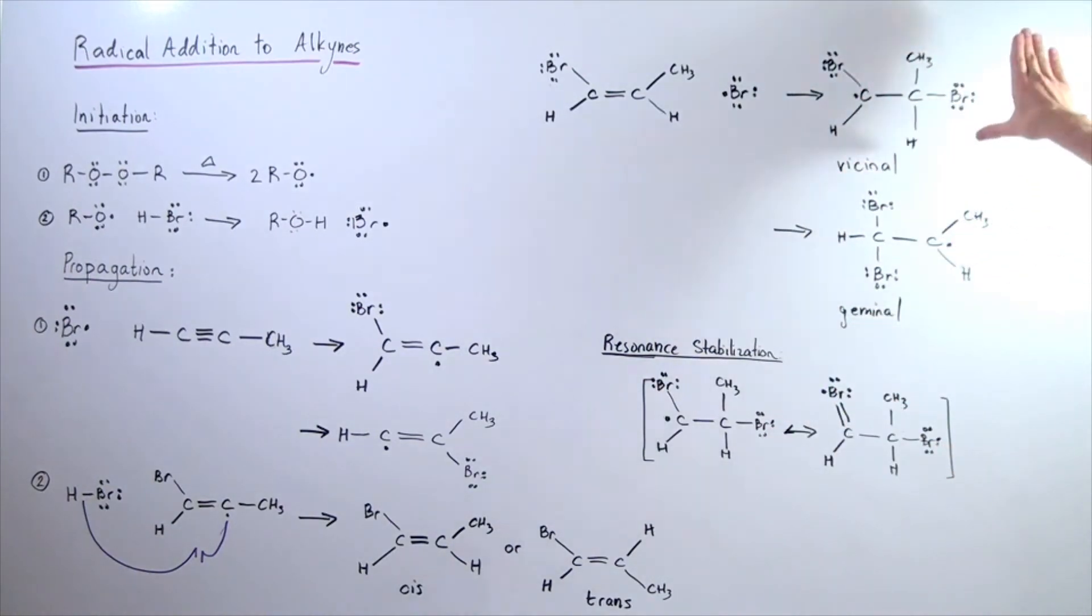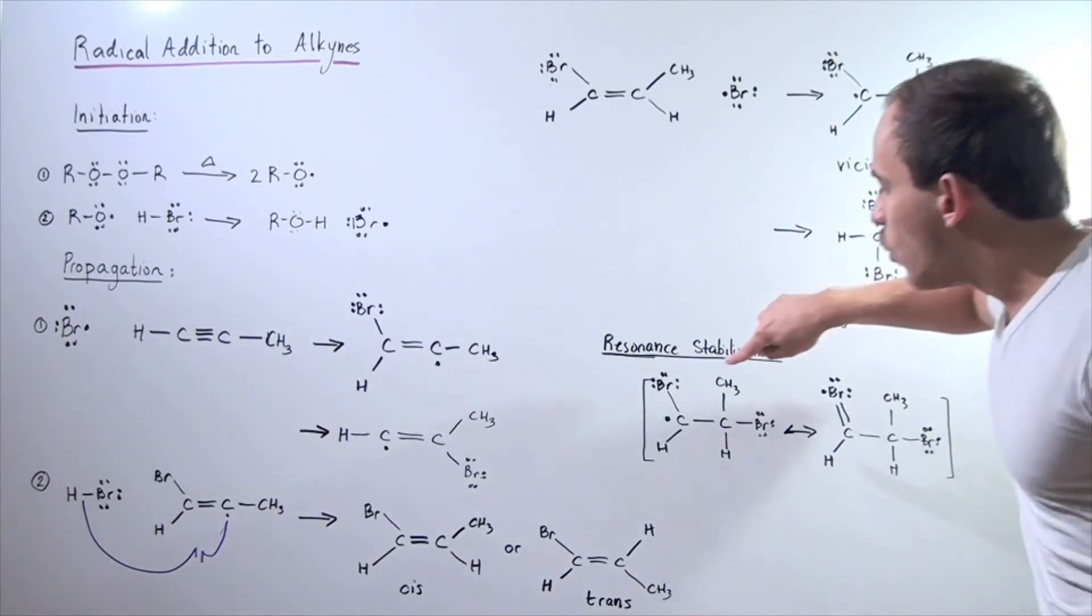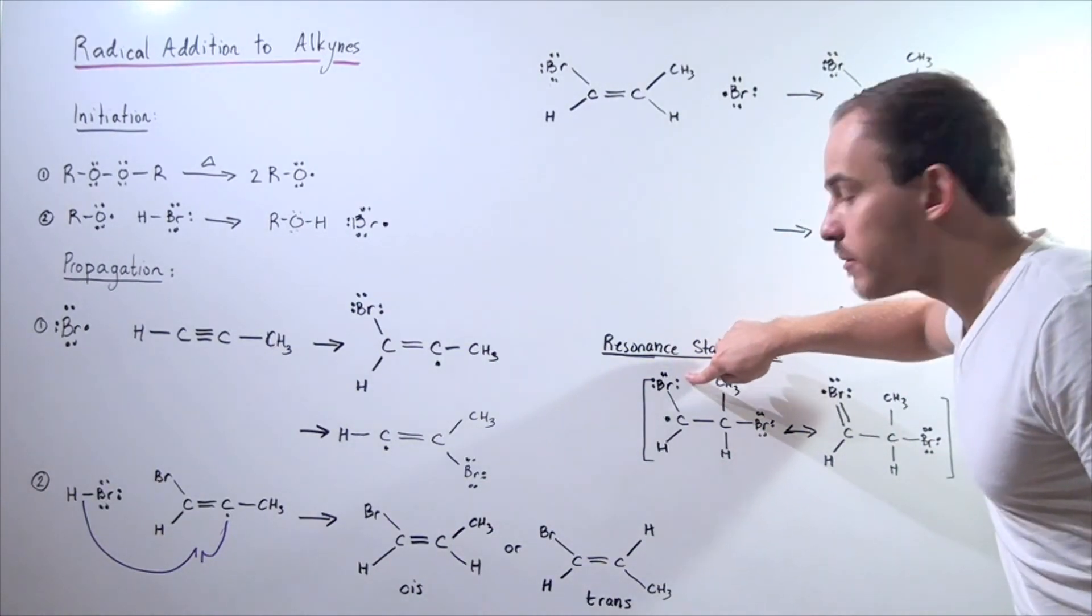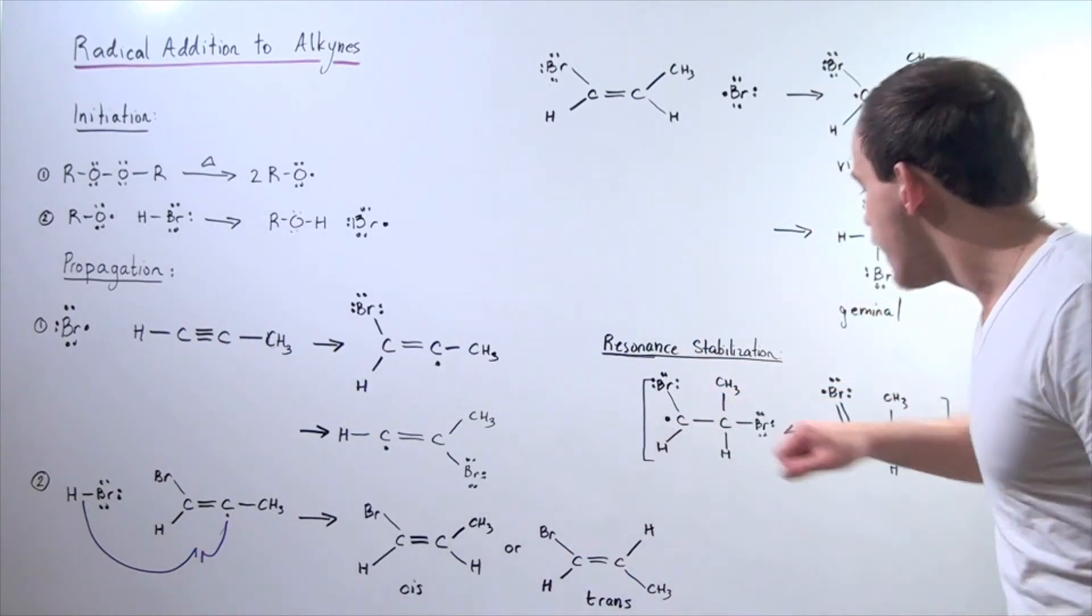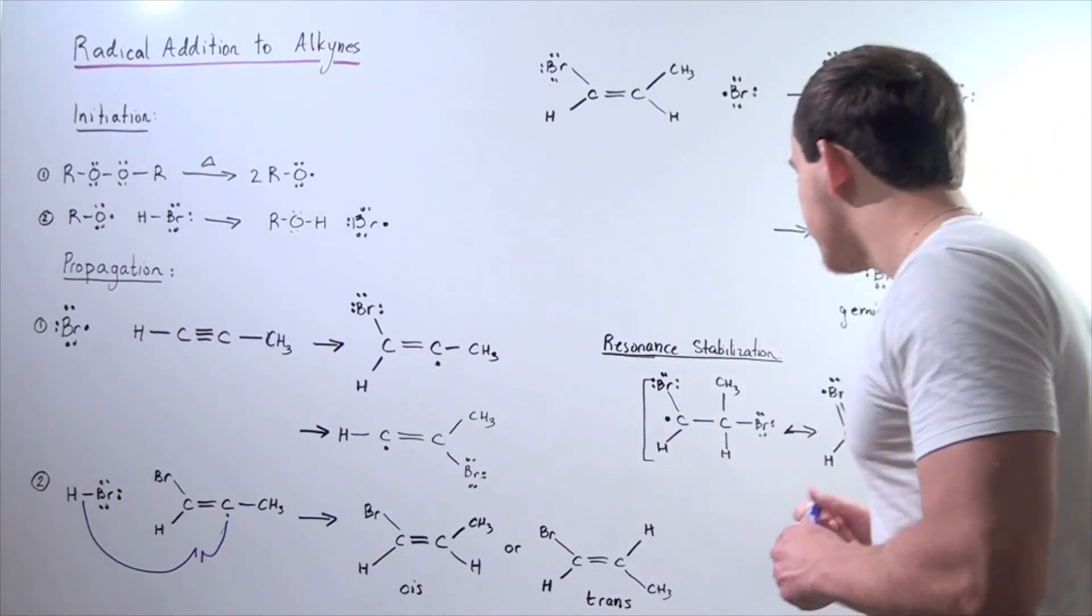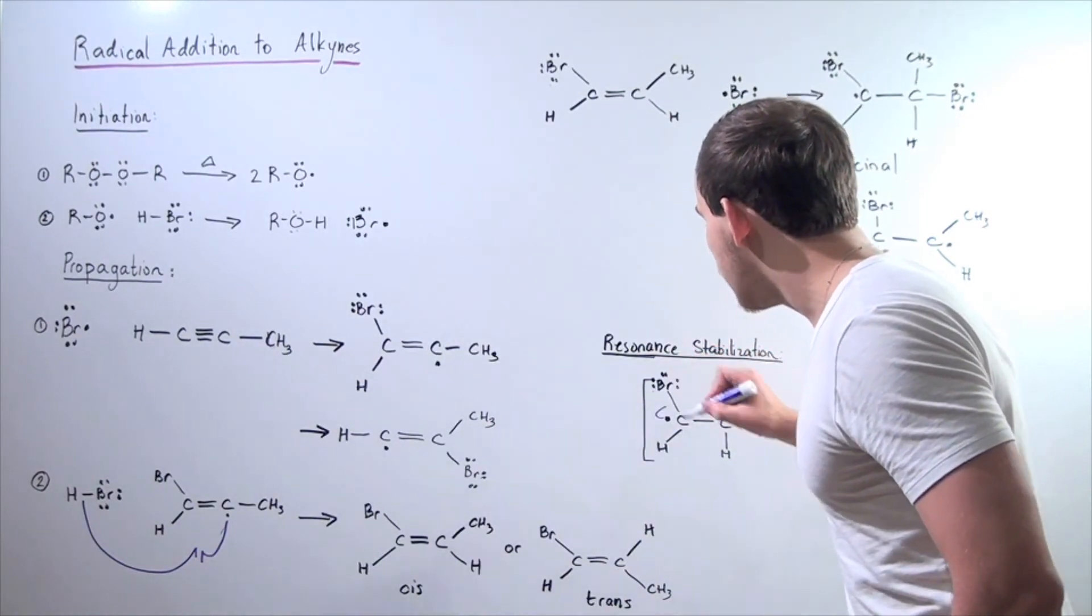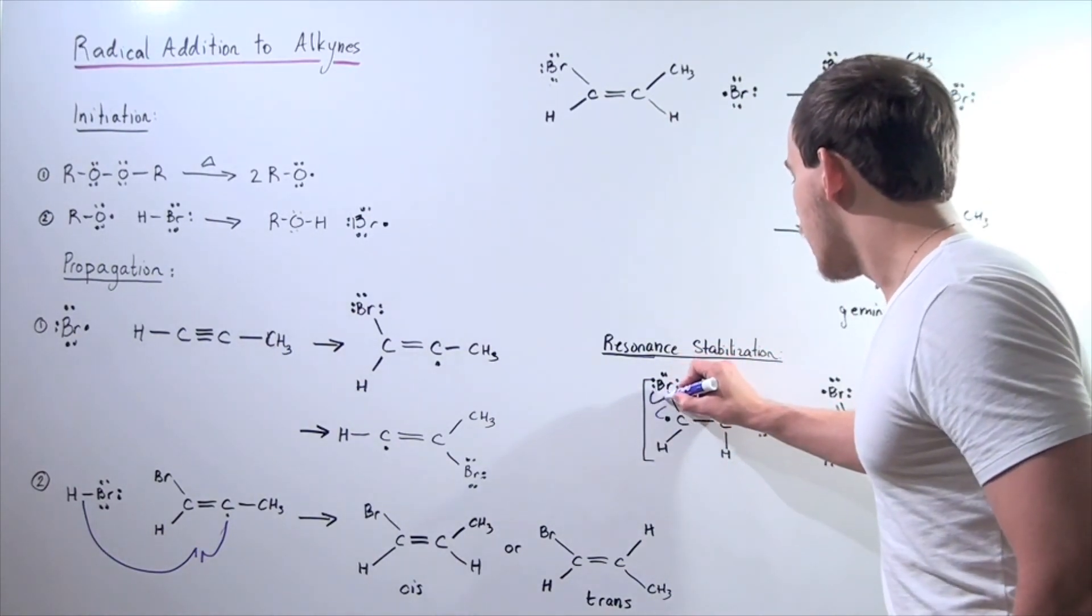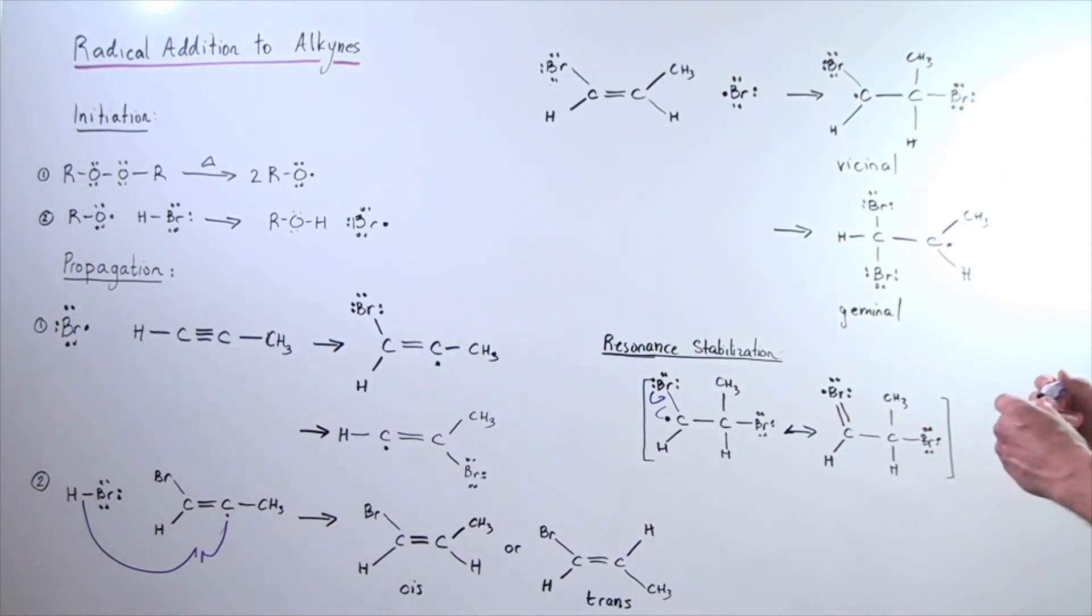If we take this vicinal shown here, what happens is one of the electrons on the bromide can interact with this electron, forming the following resonance stabilized form, forming this double bond. In other words, what happens is this single electron forms a double bond between this carbon and this bromide shown here.